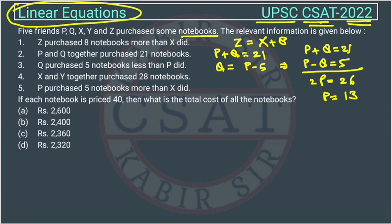Now X, Y together purchased 28 notebooks. So X plus Y equals 28. And from this equation, P purchased, P is how much? 5 notebooks more than X did. So this is X plus 5. From here we know P equals 13.